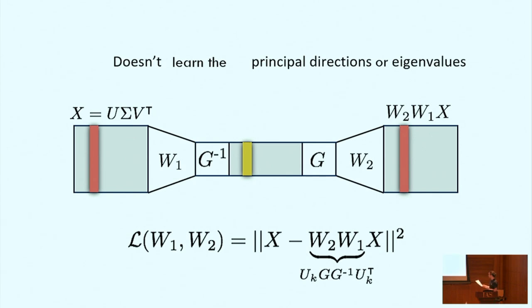So while we know where the optimal projection matrix is, neither W1 nor W2 is uniquely defined. Given an optimal W1 and W2, all other minima are obtained by composing W1 with an invertible matrix G, and W2 with G inverse. And thus, the loss function of a linear autoencoder is invariant under this action of the group of invertible K by K matrices. So in summary, while linear autoencoders learn the subspace spanned by the principal directions, they cannot learn the individual directions or the eigenvalues due to this invariance.